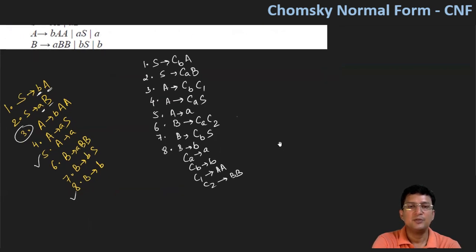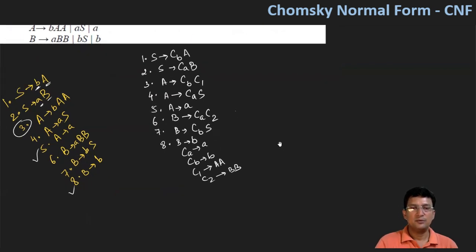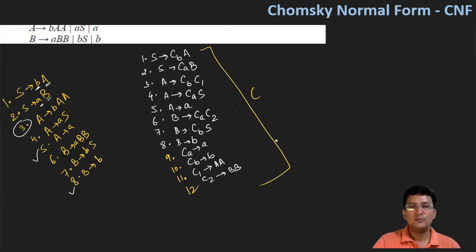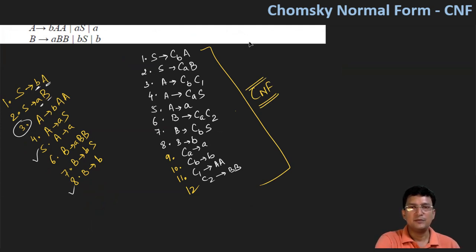So now we have these productions, and the four new productions we number as 9, 10, 11, and 12. These are all now in Chomsky Normal Form. So this was very easy to convert. I hope you must have understood this. Thanks for watching this video.